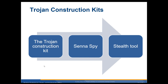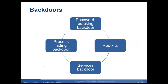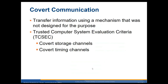A Trojan construction kit — examples include Stealth Tool or Senna Spy. Once you have a Trojan on a system you may also want to put in a back door for later access. Types of back doors include: password cracking back doors, process-hiding back doors using rootkits which hide themselves well, and service back doors where you add background services that allow you to sneak back in later.